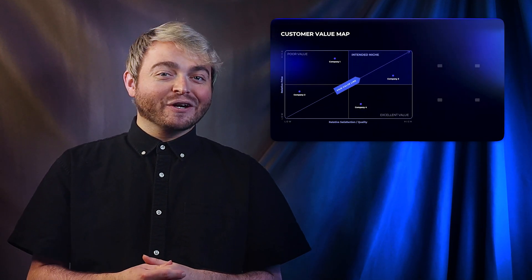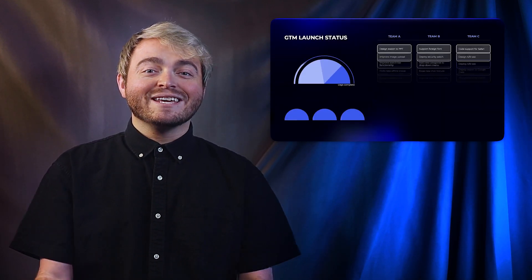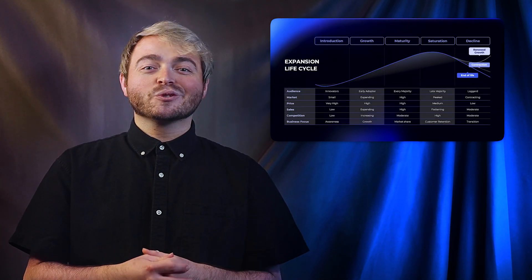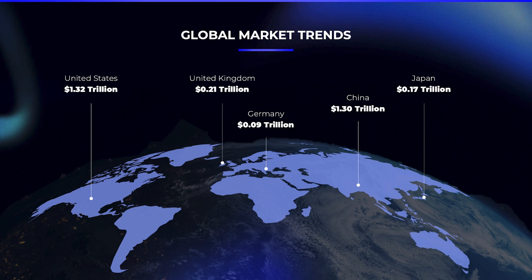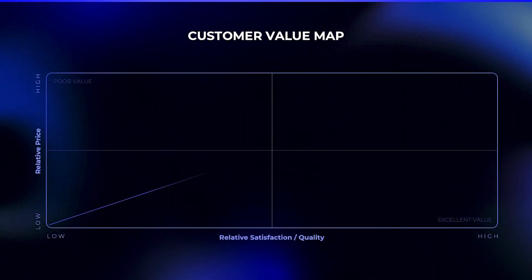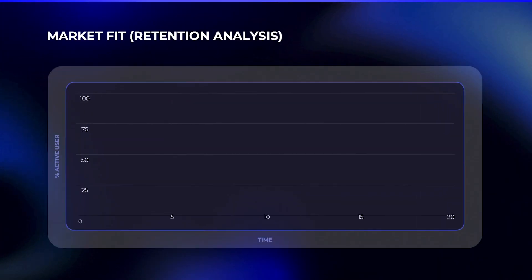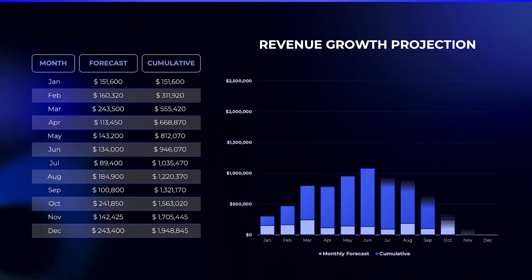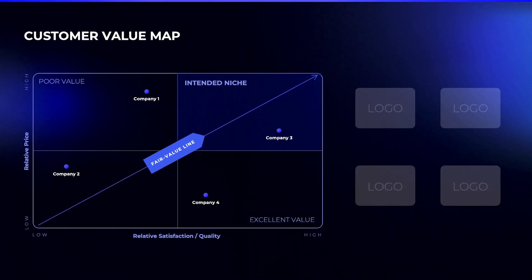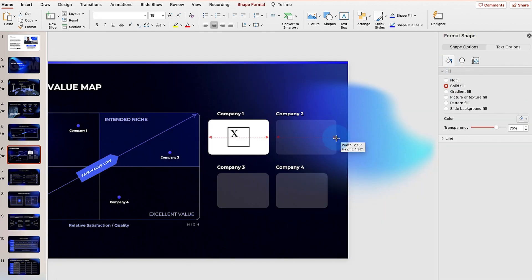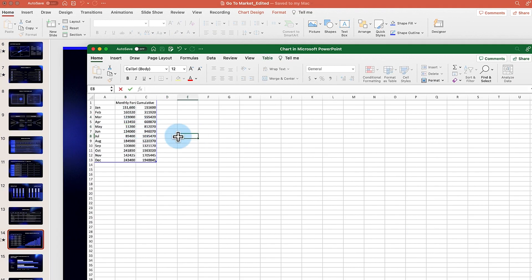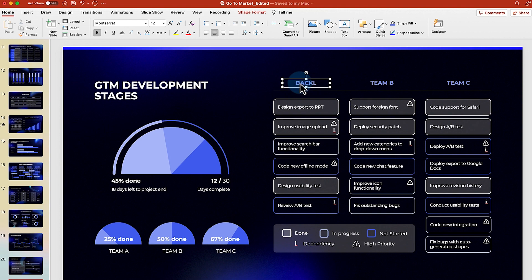This go-to-market strategy presentation covers the essential components of a GTM plan and includes tools such as market trends analyses, customer value map, product market fit, expansion lifecycle, revenue growth projection, plus many more. Let's review how these tools can be customized to your unique business needs and how they can be aligned to multiple departments to work toward your same goal.